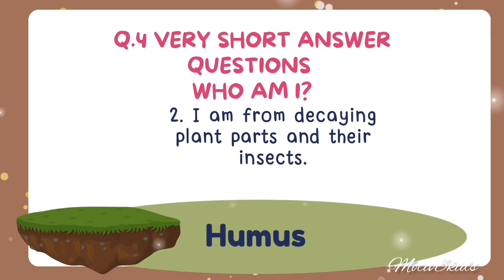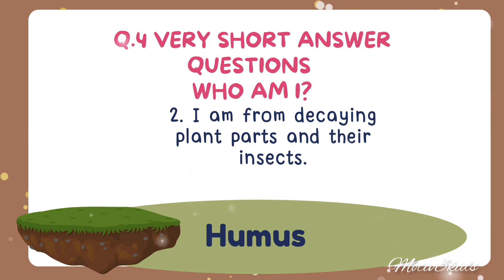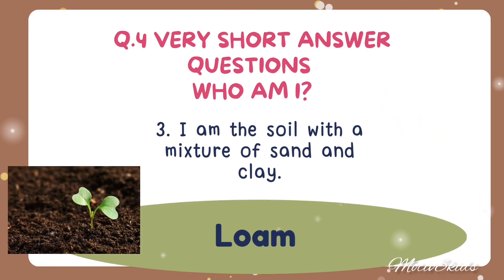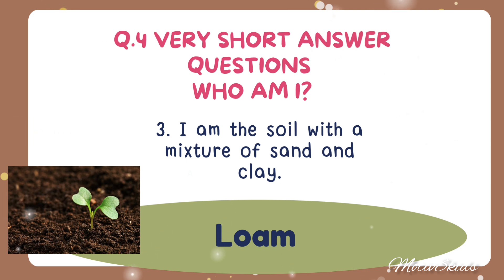The second one: I am formed from decayed plant parts and insects. This is known as humus. Humus is formed from decayed plant parts. The third one: I am the soil with a mixture of sand and clay. This soil is known as loam. Loam is a mixture of sand and clay.